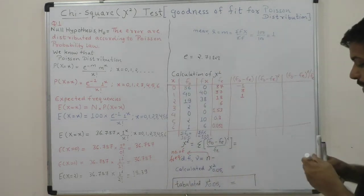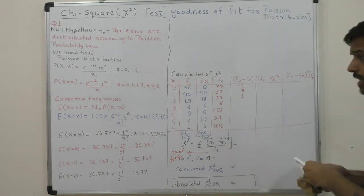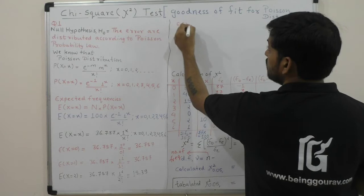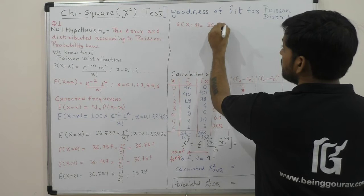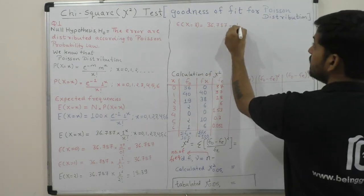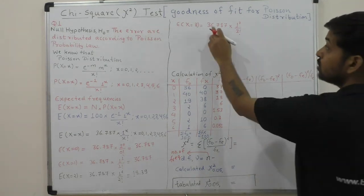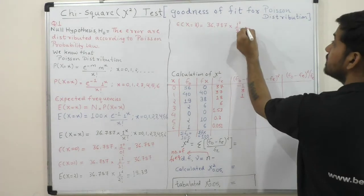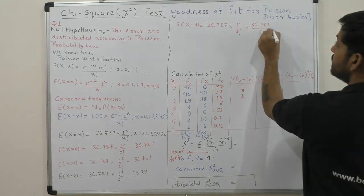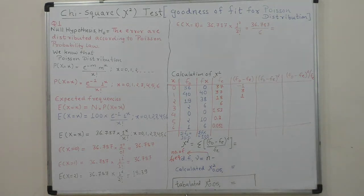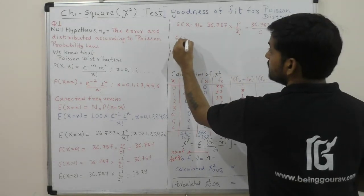Similarly, the expected frequency corresponding to x=3 is 36.787 multiplied by 1 to the power 3 divided by 3 factorial. Now 3 factorial means 6, so 36.787 divided by 6 gives the value 6.13.